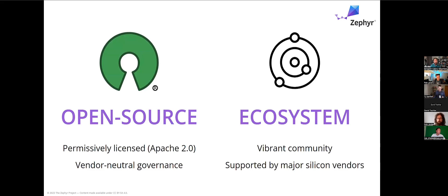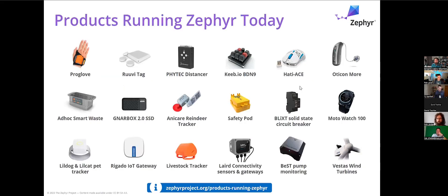Zephyr is open source, with a crazy active community on GitHub of thousands of people making it a reality day-to-day. Every four months you get a new major release, and it's supported by a vibrant ecosystem. Many, if not all, silicon vendors support Zephyr in one capacity or another. Whether you care about ESP32, STM32, Nordic, or non-ARM architectures like Xtensa for Espressif — there's support for all of them. Tons of products out there have ML and TinyML capabilities, and Zephyr is a great choice for that.